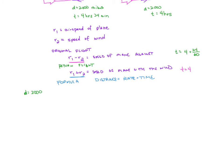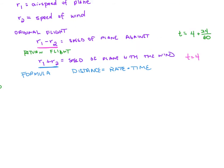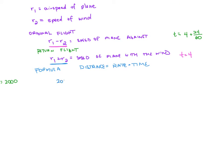We know distance is 2,000, and we have our two rates and two times. For the first equation: 2,000 equals (R1 minus R2) times (4 plus 24/60). For the second equation, the return flight: 2,000 equals (R1 plus R2) times 4.